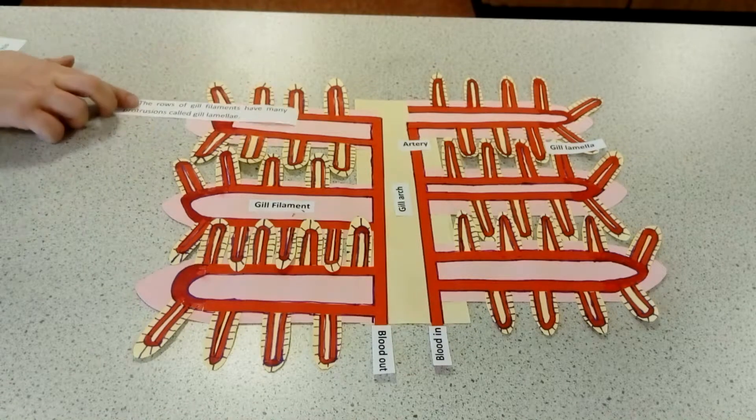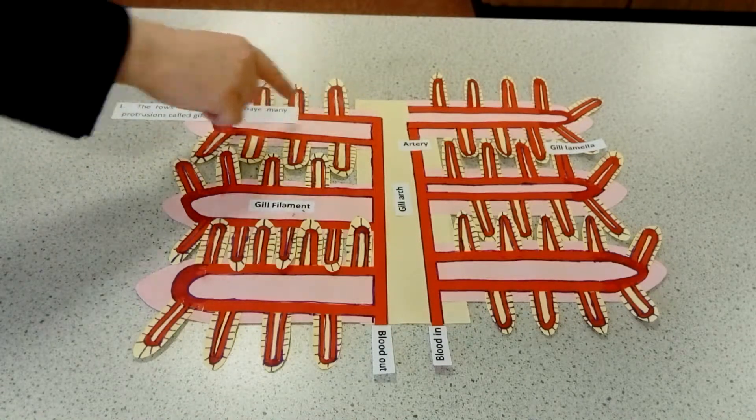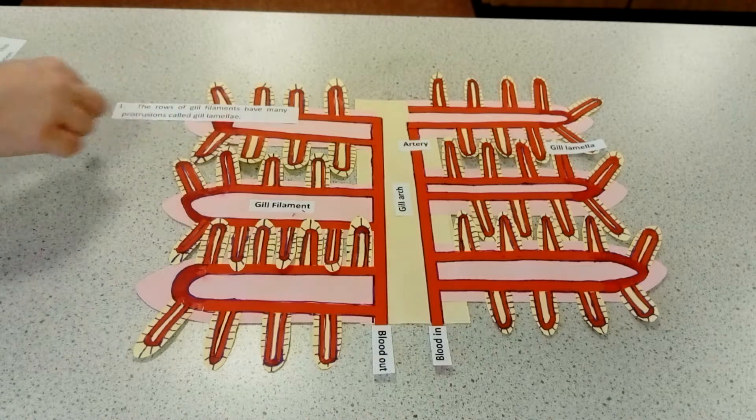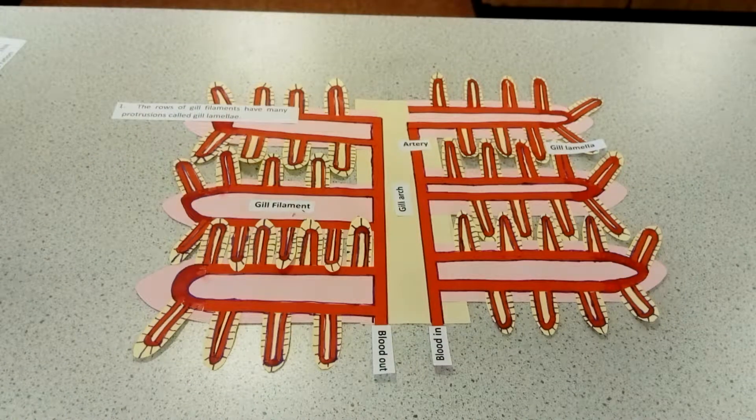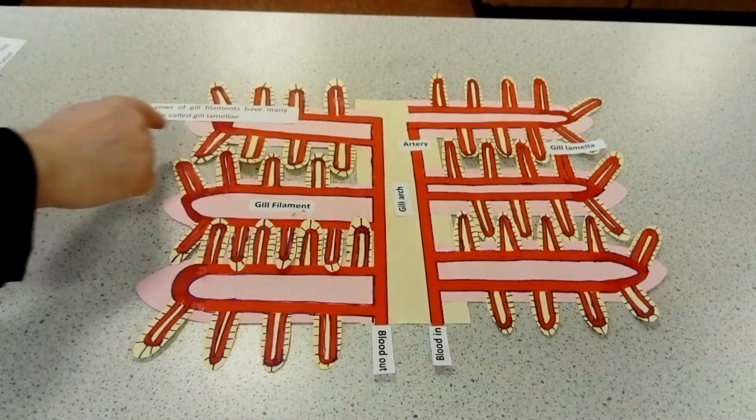So to start off with, the rows of gill filaments, so these are gill filaments here, have many protrusions called lamella.